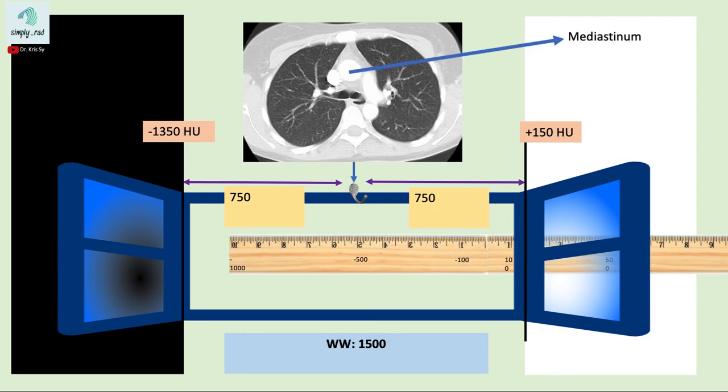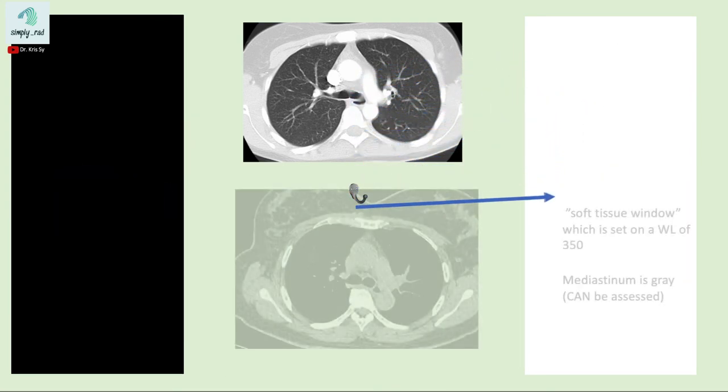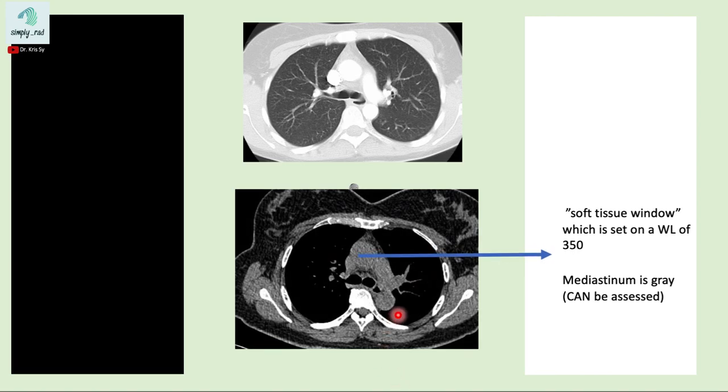Mediastinum, which is composed of soft tissues, is displayed as white. But when we switch to a soft tissue window, which is centered at a positive Hounsfield unit of 350, the mediastinum is now gray and can now be assessed.